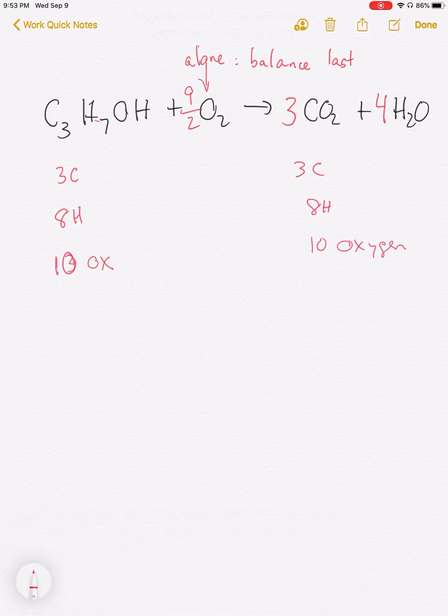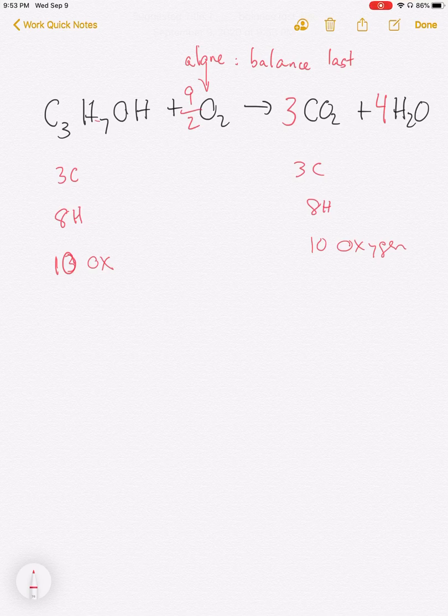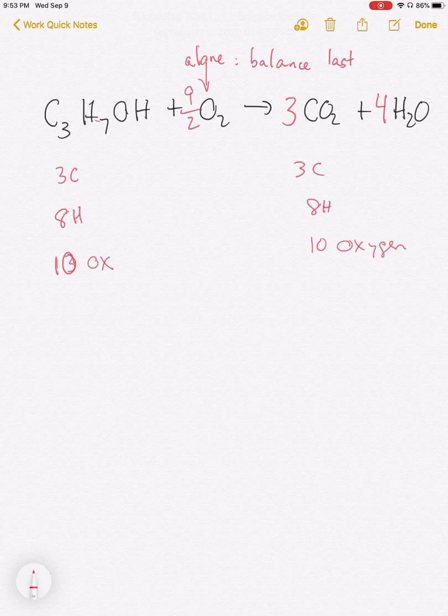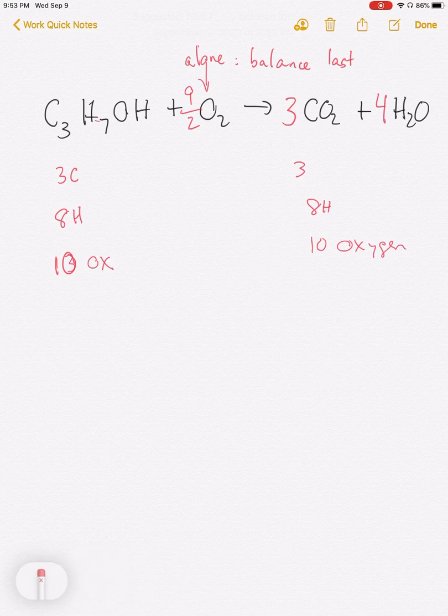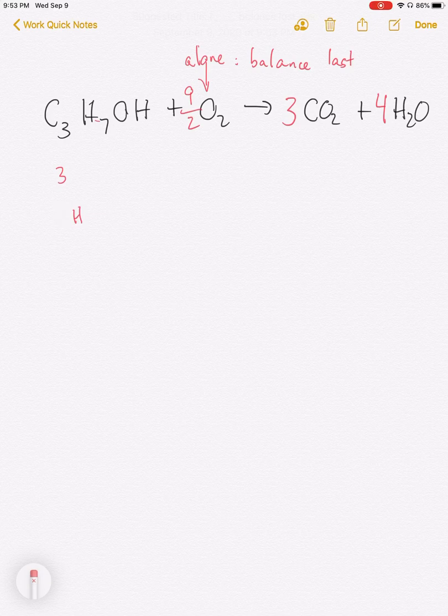The only problem with that is that we typically want whole number coefficients. So the easiest way to get whole number coefficients and keep it balanced is to simply multiply everything through by two. So I want to double all of these coefficients.